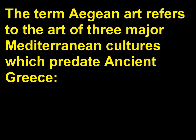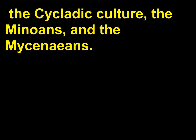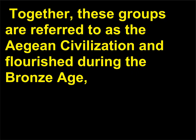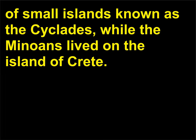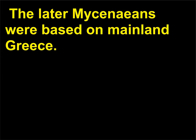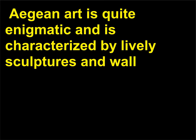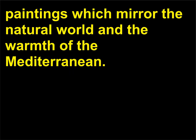What is Aegean art? The term Aegean Art refers to the art of three major Mediterranean cultures which predate ancient Greece: the Cycladic culture, the Minoans, and the Mycenaeans. Together, these groups are referred to as the Aegean civilization and flourished during the Bronze Age, c. 3000–1200 BCE. The Cycladic culture established itself on a group of small islands known as the Cyclades, while the Minoans lived on the island of Crete, and the later Mycenaeans were based on mainland Greece. Aegean art is quite enigmatic and is characterized by lively sculptures and wall paintings which mirror the natural world and the warmth of the Mediterranean.